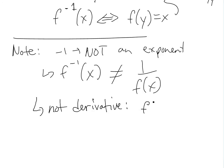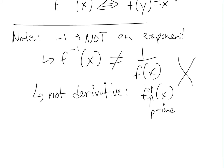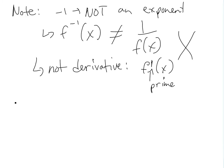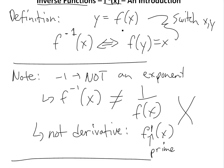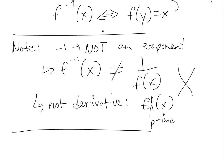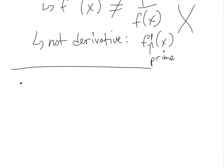For example, some write the derivative like f prime of x, and this is called prime. So the inverse notation f⁻¹(x) is not either of these — not a reciprocal exponent, not a derivative. I'll always write it clearly. So let's explain this through an example and also show you the properties.